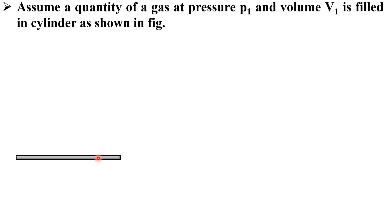First of all, assume a quantity of a gas at pressure P1 and volume V1 is filled in a cylinder as shown in figure. Let me draw the figure. Consider this is a cylinder in which piston reciprocates and this is the system. For example, it is filled with the gas.